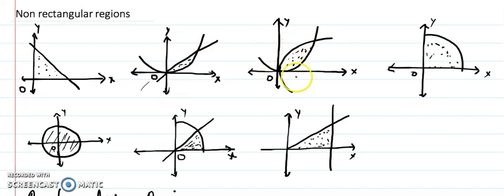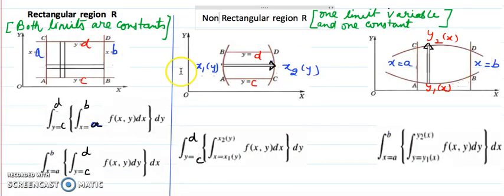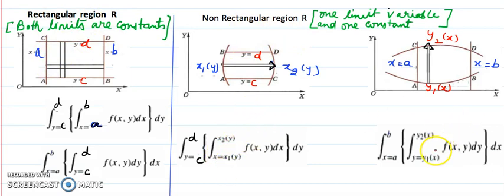Whenever we see that the boundary is curved or made of slanting lines, or any mixture of those, it always gives you variable limits. Whereas when it is a rectangular or square region, the limits always come out to be constant. So whenever both limits are constant it means the question is to be evaluated over a rectangular region, and whenever you see that limits are variable — either in x or y — it means the boundary is not a rectangle; it could be slanting lines or a curved boundary.